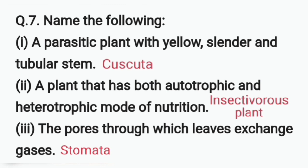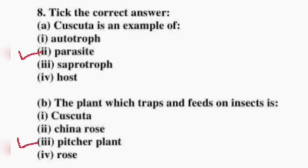Question eight: choose the correct answer. Cuscuta is an example of a parasite. The plant which traps and feeds on insects — is it Cuscuta, China rose, pitcher plant, or rose? The correct answer is pitcher plant.